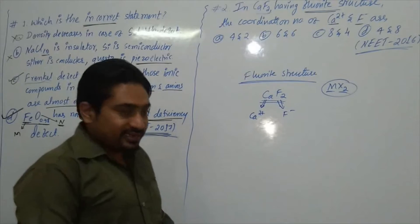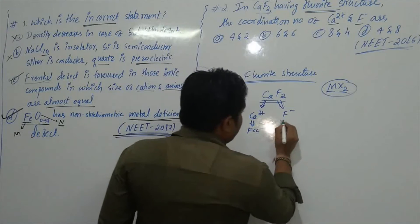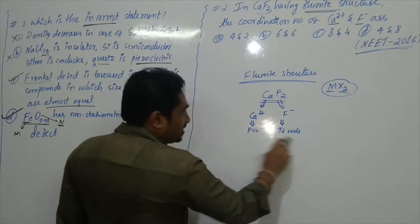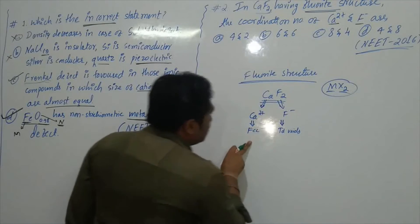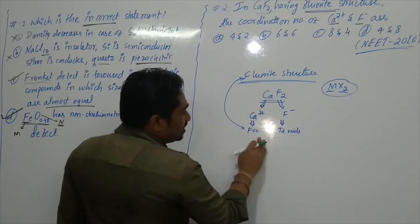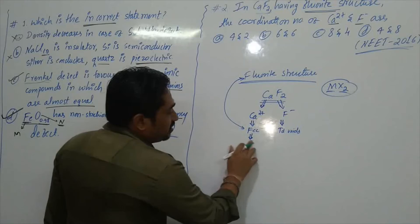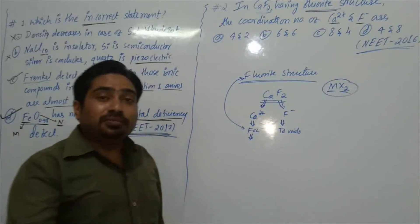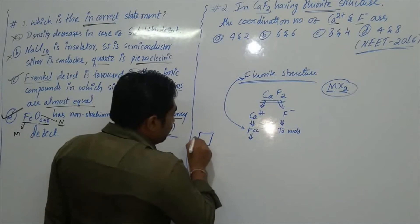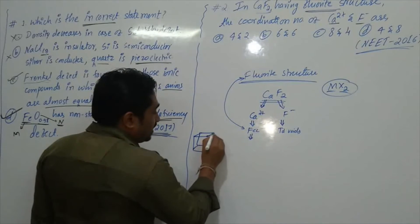The fluoride ions occupy the tetrahedral voids, and calcium ions occupy the FCC positions. In the fluorite structure, FCC is generated by the calcium ions. In an FCC unit cell, particles are present at all corners as well as at each face center.